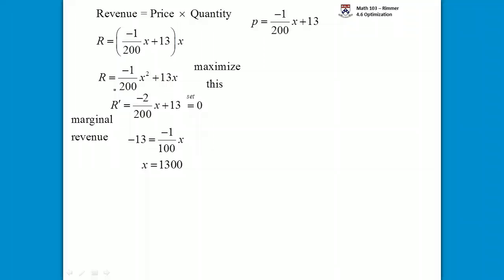If we have a quantity, how do we get the price? Plug it into the demand equation. So if p is negative 1 over 200 times x plus 13, plug in x is 1300. And you'll get the price that goes along with that quantity. If the zeros cancel out, we get negative 13 over 2 plus 13, or negative 6.5 plus 13. Talking about dollars, so let's call it negative 6.50, but it's half of 13, so we add the 13 on and we just get $6.50. That's the price that you should charge in order to maximize revenue.